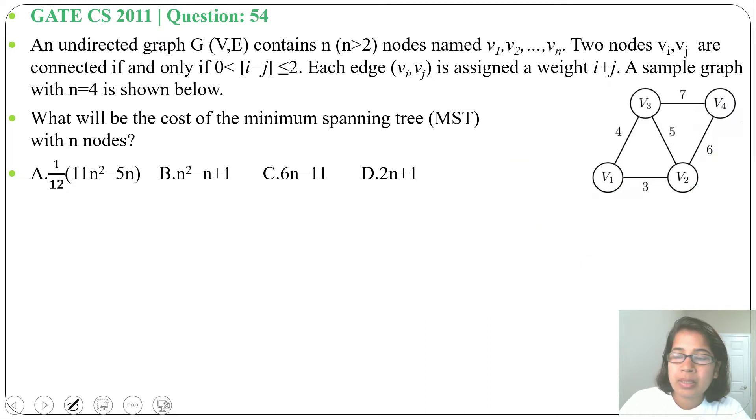Suppose n=3, this much is the graph. Then in minimum spanning tree we'll consider edges with weights 3+4, so minimum spanning tree cost will be 7. When n=4, in minimum spanning tree we'll consider 3+4+6. We cannot include 5 as it will create a cycle, so we skip 5 and include 6. So 3+4+6=13.